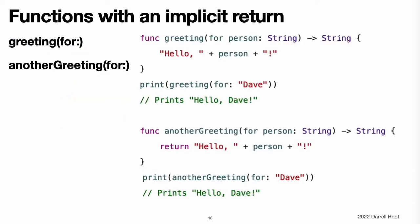Functions with an implicit return. If the entire body of the function is a single expression, the function implicitly returns that expression. For example, both functions shown here have the same behavior. The entire definition of the greetingFor function is the greeting message that it returns, which means it can use this shorter form. The anotherGreetingFor function returns the same greeting message using the return keyword like a longer function. Any function that you write as just one return line can omit the return. Note: the code you write as an implicit return value needs to return some value. For example, you cannot use print(13) as an implicit return value. However, you can use a function that never returns, like fatalError, as an implicit return value, because Swift knows the implicit return does not happen.